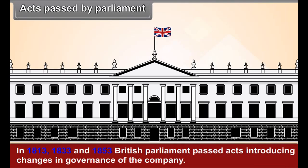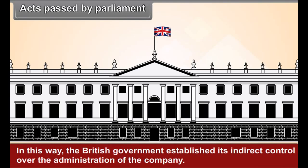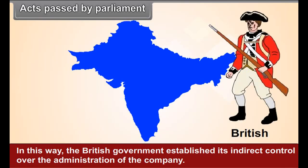In 1813, 1833 and 1853, British Parliament passed Acts introducing changes in the governance of the company. In this way, the British government established its indirect control over the administration of the company.